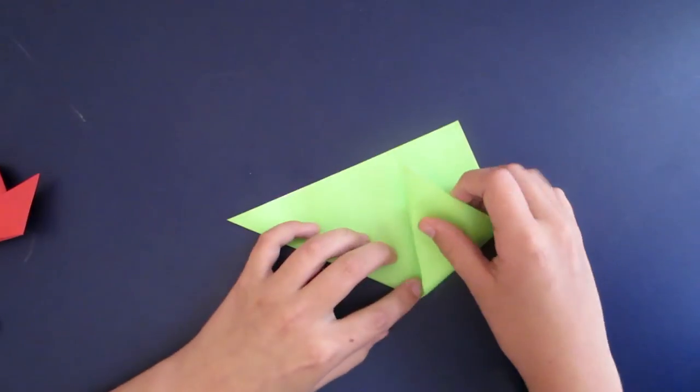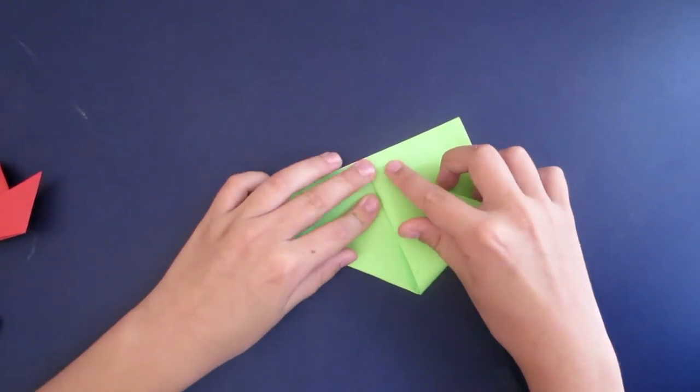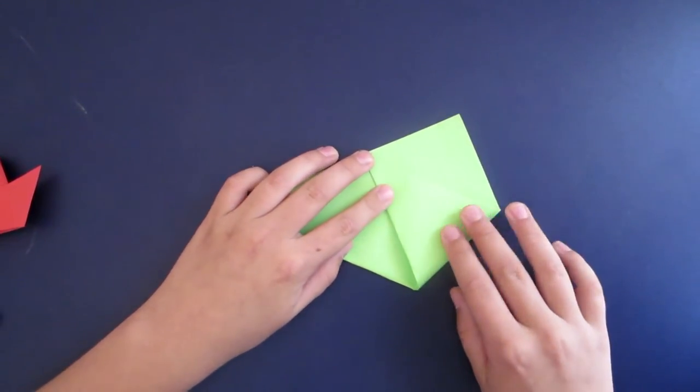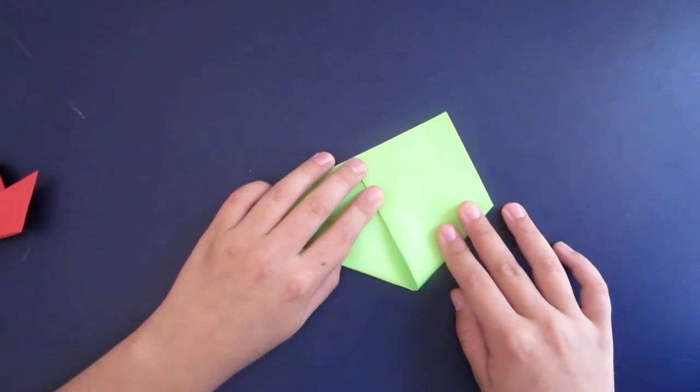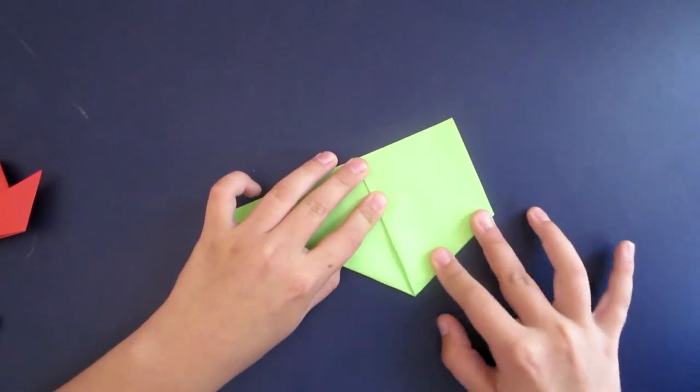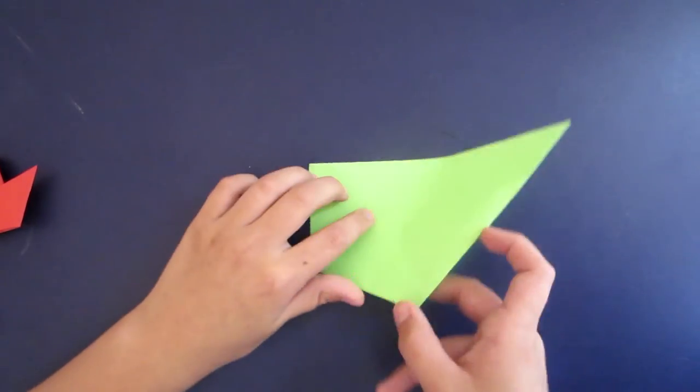Then you're going to take this side and fold it up so that it's like this. Flip it over and do the same with the other corner.